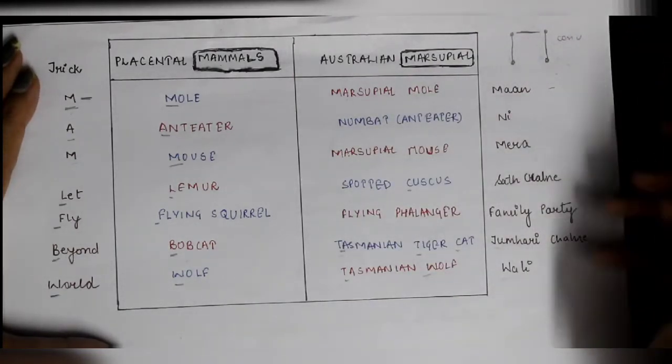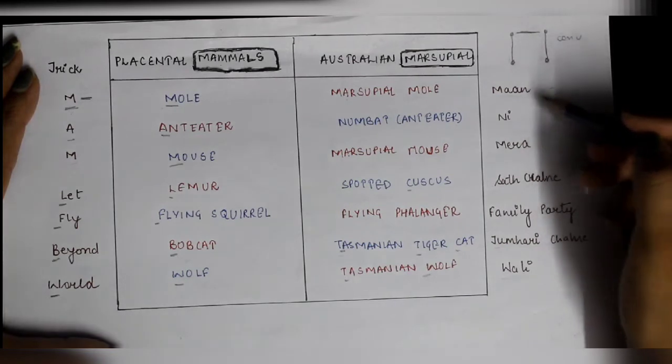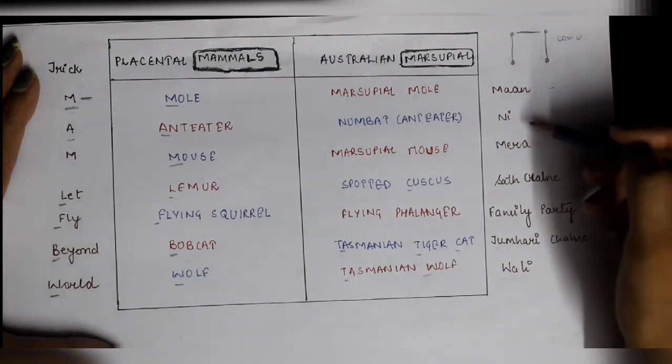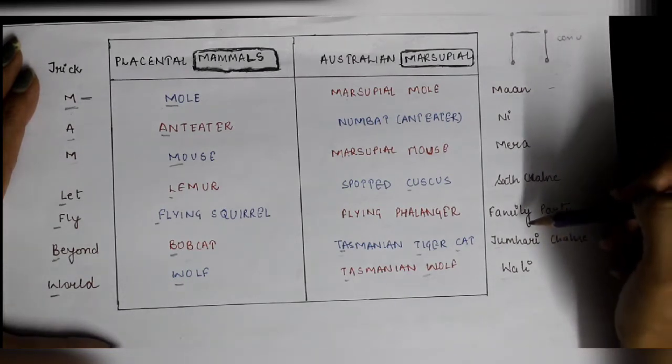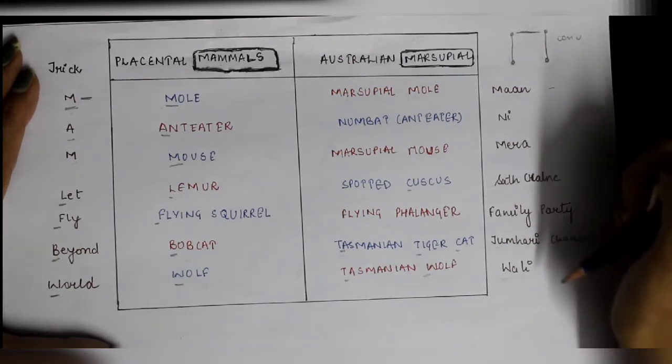But there is also a mnemonic for Australian marsupials: 'ma'am man nahi mera, saath chalne, family party' — this helps you remember the Australian marsupials.